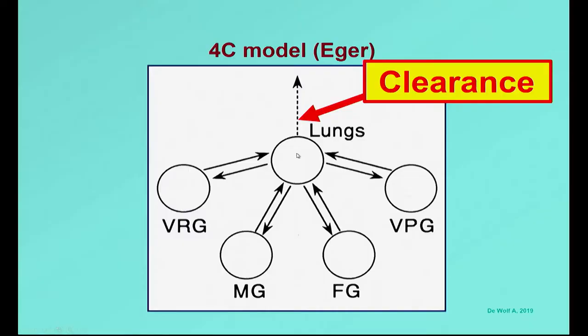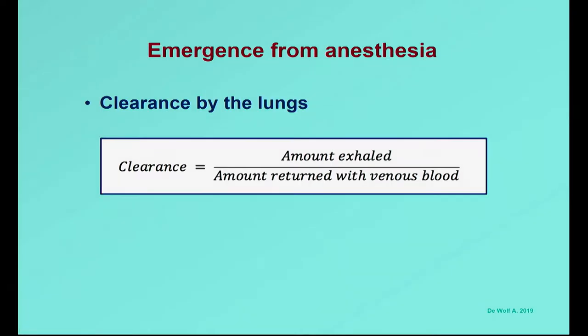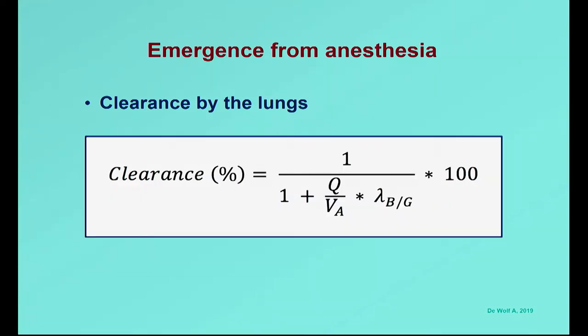We also have clearance. You have to get rid of the agent not just from the tissue group towards the lungs, but from the body completely. That's where ventilation comes into play — clearance plays a big factor. Clearance is defined by the amount of agent exhaled over the amount returned with venous blood. The formula shows that minute ventilation is very important, and the second very important factor is blood-gas solubility. As Derek pointed out, we can't change blood-gas solubility, but we can change minute ventilation.